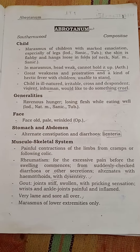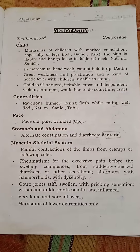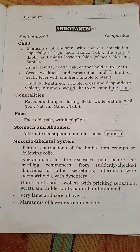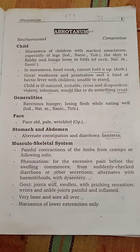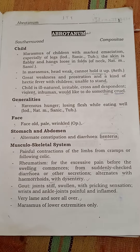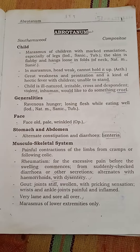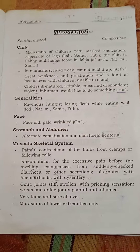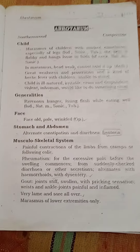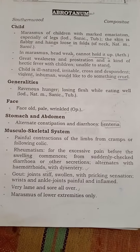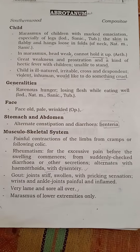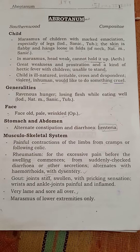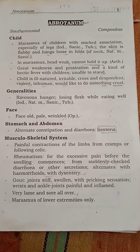There is prostration and a kind of hectic fever. Children are unable to stand. The child is ill-humored, ill-natured, irritable, cross, and despondent — violent, and would like to do something cruel. Generally, there is ravenous hunger while losing flesh even when eating well. The face appears old and pale.